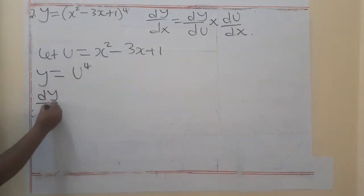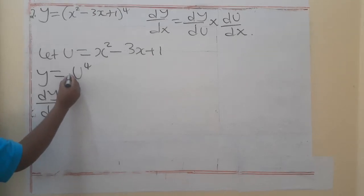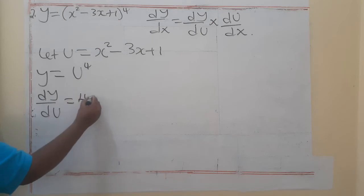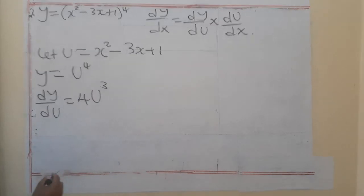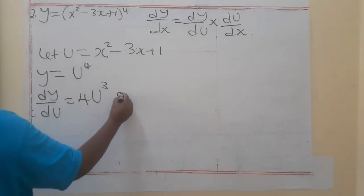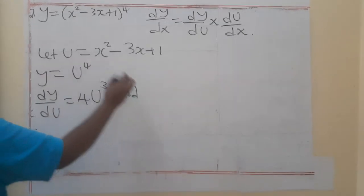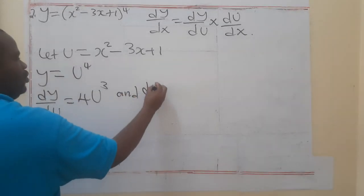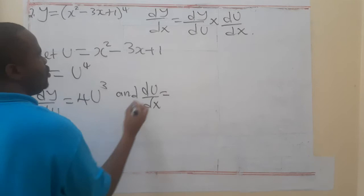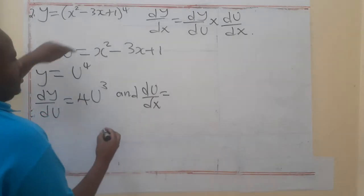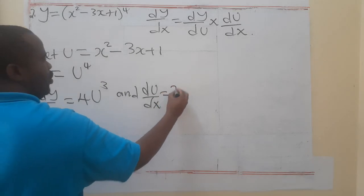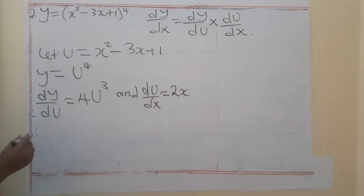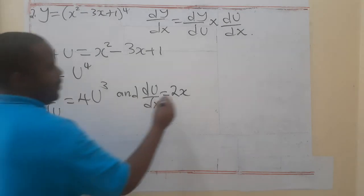So, dy/du is equal to, what is the coefficient here? It's 1. So, 4 by 1, 4. So, 4 u to the power 4 minus 1, 3. And, you know, differentiate u with respect to x. So, say, du/dx is equal to, so this is the 1. So, we have got 2x here.